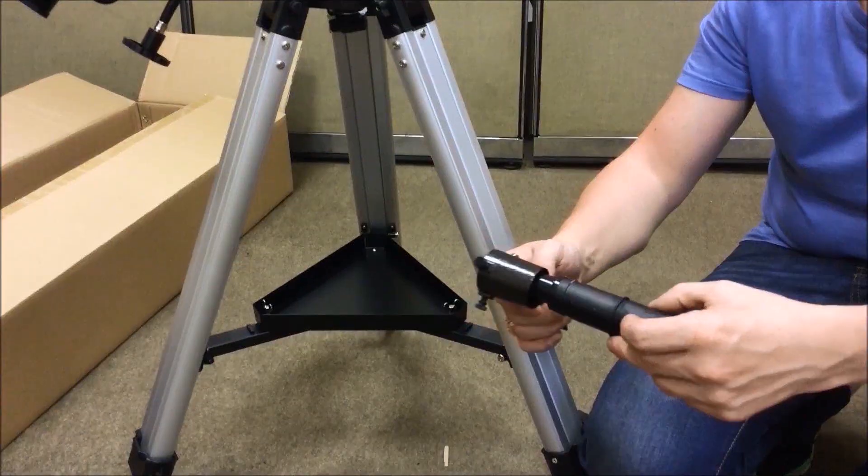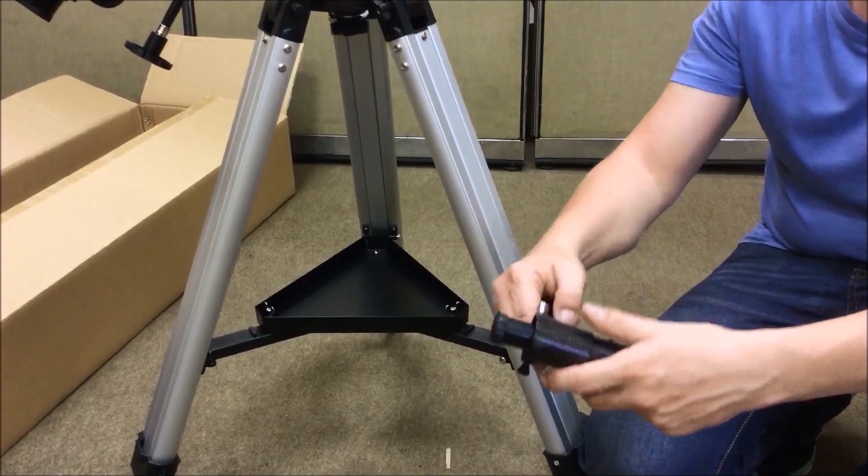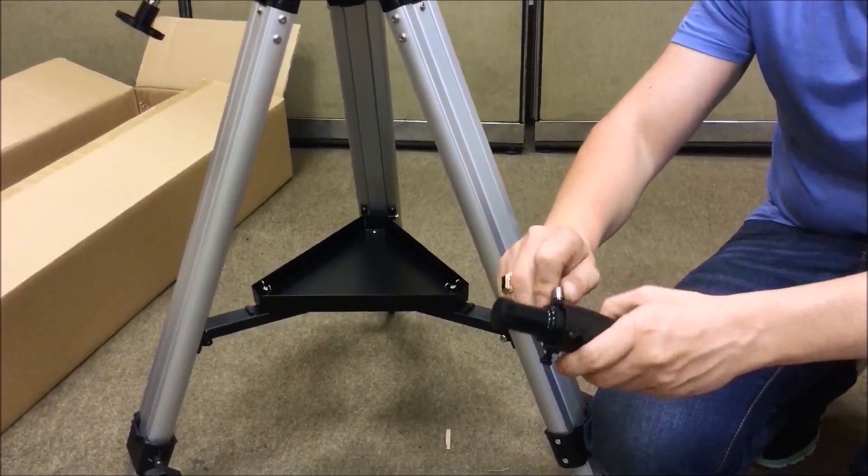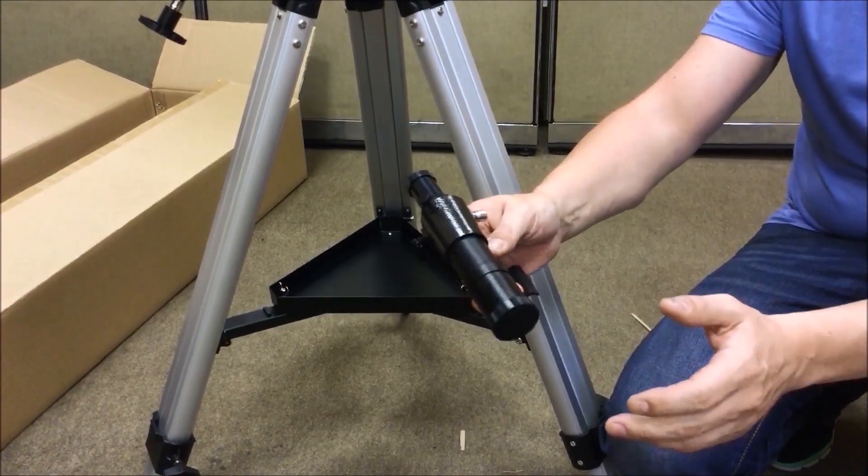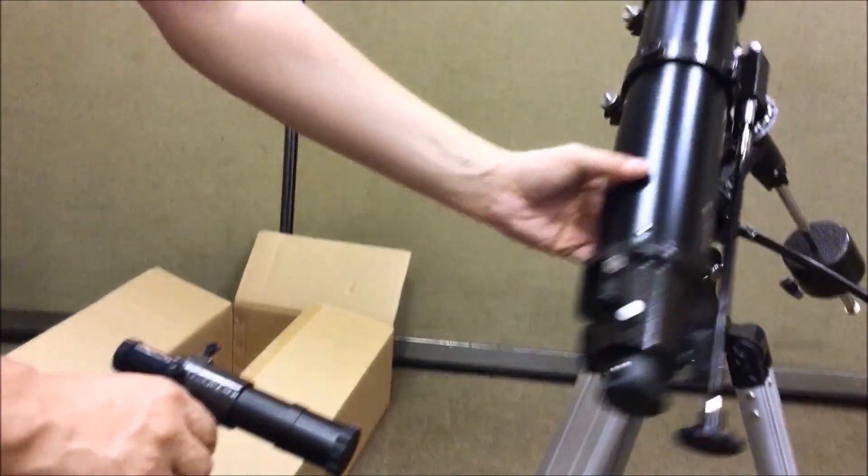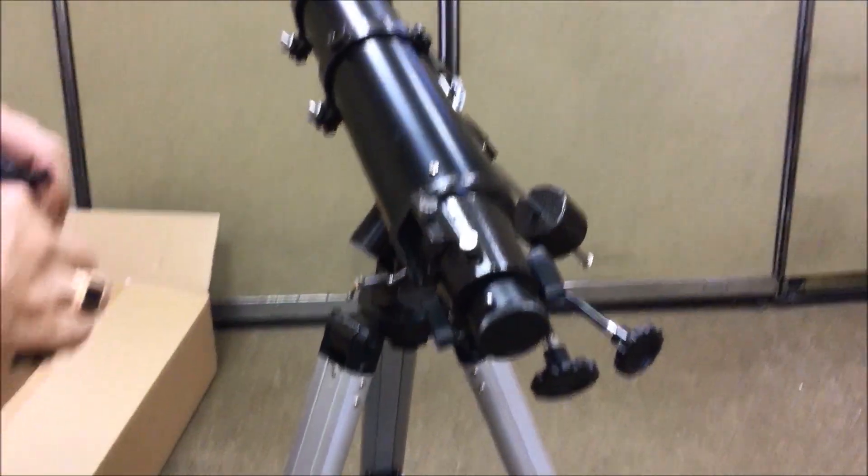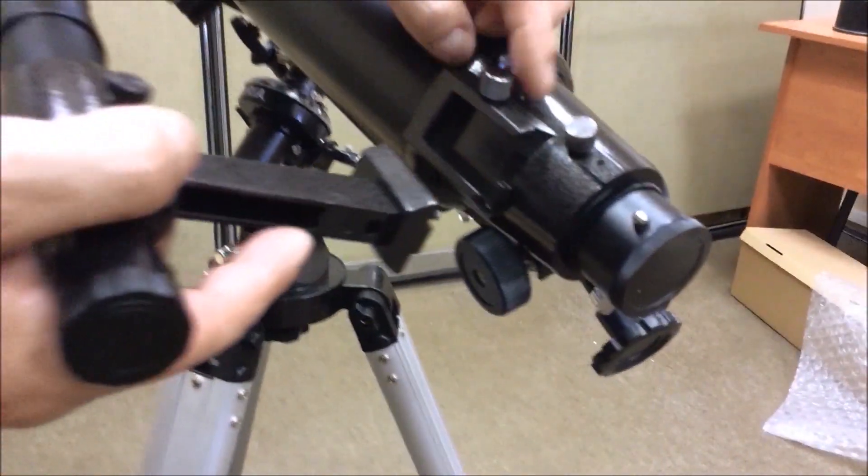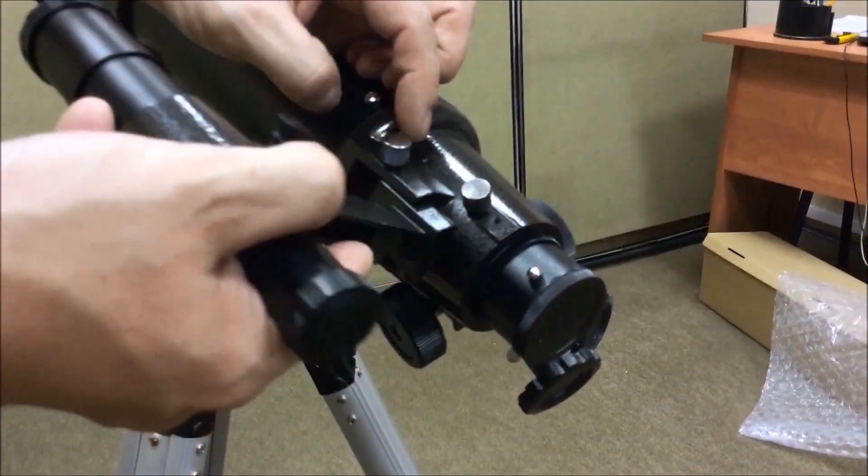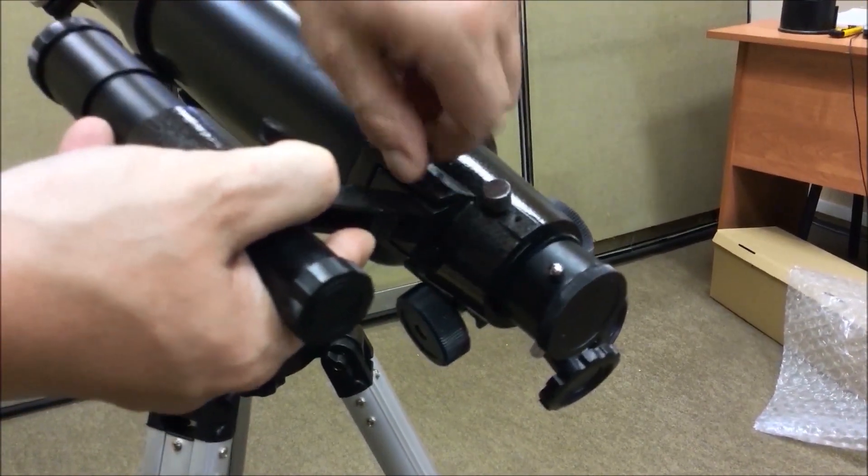Now we set the finderscope in the base by pulling the silver stopper and planting it inside until the finderscope is securely fixed. The telescope tube has a special mounting plate for the finderscope. Loosen the screw on the plate, slide the finderscope in there, and then tighten the screw.